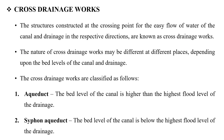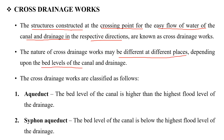Next, we are going to cover cross drainage. A structure constructed at the crossing point of a canal and a drainage for the easy flow of water in their respective directions is known as cross drainage.